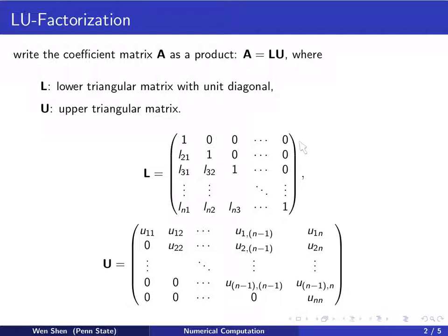And this upper triangular part, all the elements are 0. And similarly for this U, the lower triangular part shall be 0. And then from the diagonal on and up, these could be non-zero elements.